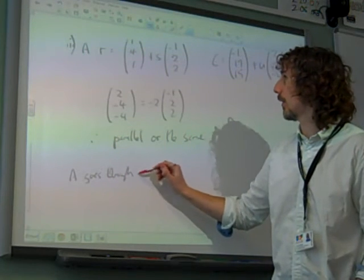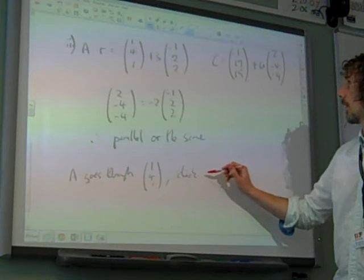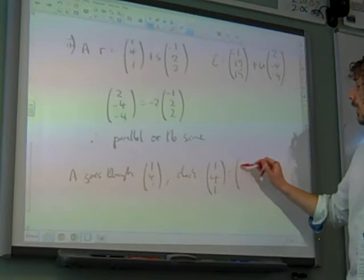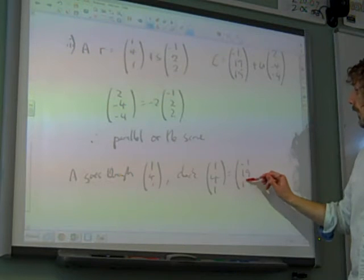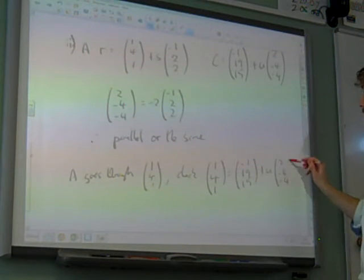A goes through the point 1, 4, 1. So if we check it on the other line, 1, 4, 1 is minus 1, 19, 15 plus u times 2, minus 4, minus 4.